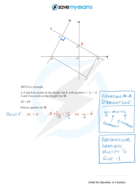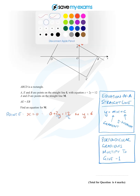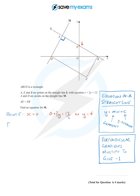Now for point B — in a very similar way, B lies on L and also on the x-axis. On the x-axis, all points have y = 0. Substituting: x + 2 times 0 = 12, so x = 12. The x-coordinate of point B is 12.